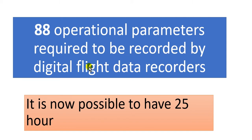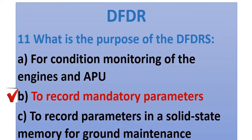How many hours? From 2017, it is now possible to have between 17 and 25 hours of recorded data. So after an accident, we need all mandatory parameters — not only for engines or APU, and not only for ground maintenance, but all mandatory parameters. The answer is B.